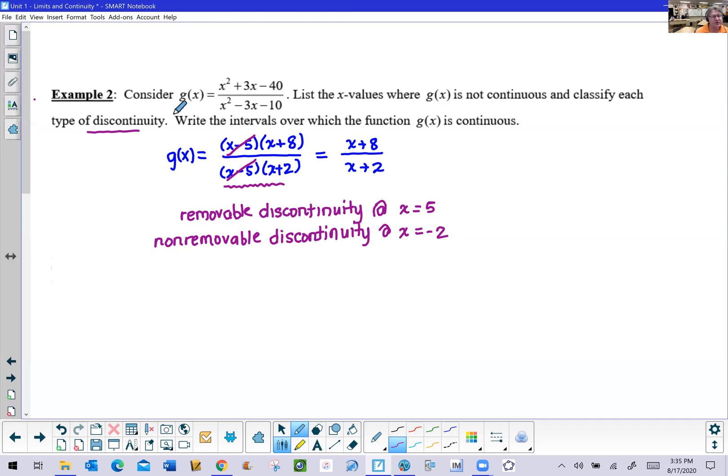Now, the question did ask to write the intervals over which the function was continuous. So basically, this function is continuous everywhere besides those two numbers. And maybe the easiest way to do that is just to string together some nice interval notation.